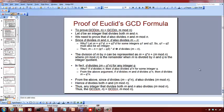Alright, so now let's look at the proof of Euclid's GCD formula, which is GCD of two integers m and n is GCD. Note that what we are trying to